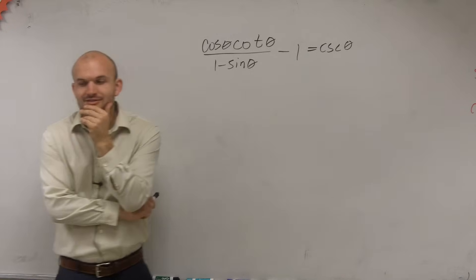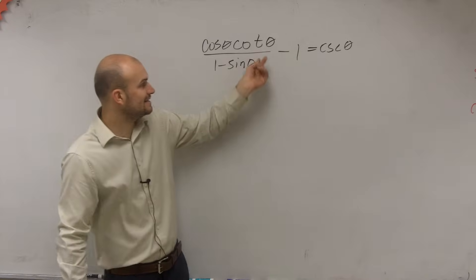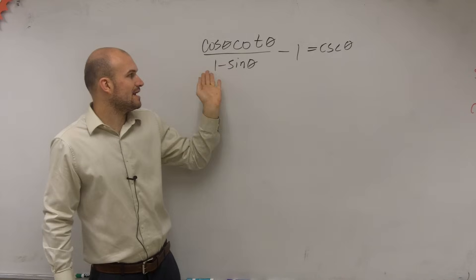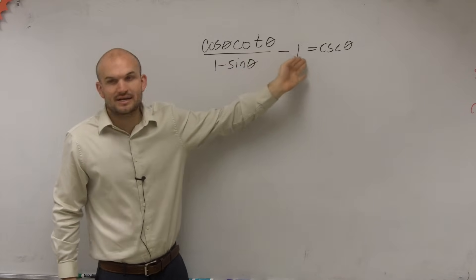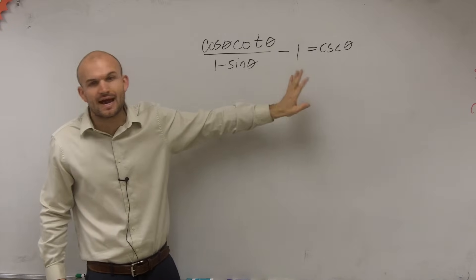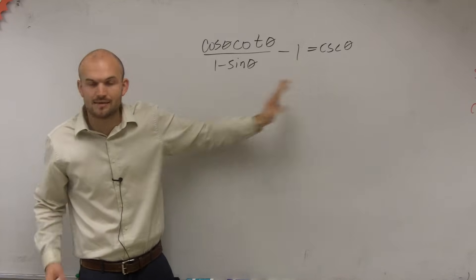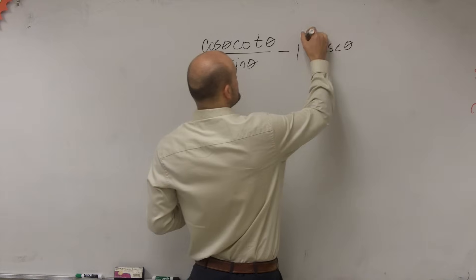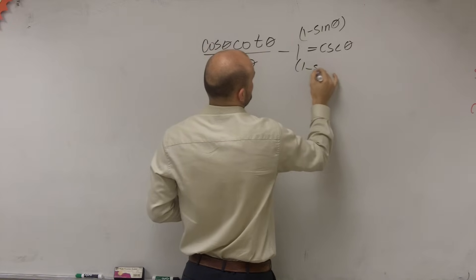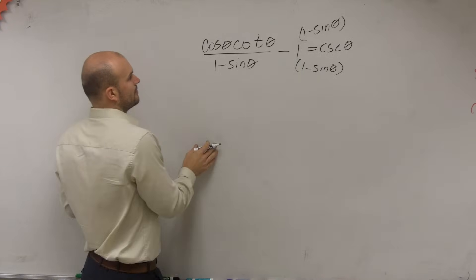All right, so ladies and gentlemen, the first thing we want to do is apply operations. It's asking us to have cosine of theta times cotangent theta divided by 1 minus sine of theta to subtract it by 1. So let's apply that operation. But I can't just subtract by 1. I have to make sure it has the same denominator, right? You have to have common denominators. So therefore, I am going to multiply by 1 minus sine of theta on the top and bottom.